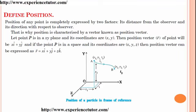Let point P be in an xy-plane with coordinates x and y. Then the position vector R of the point will be xi + yj. And if the point P is in space with coordinates x, y and z, the position vector can be expressed as r = xi + yj + zk.